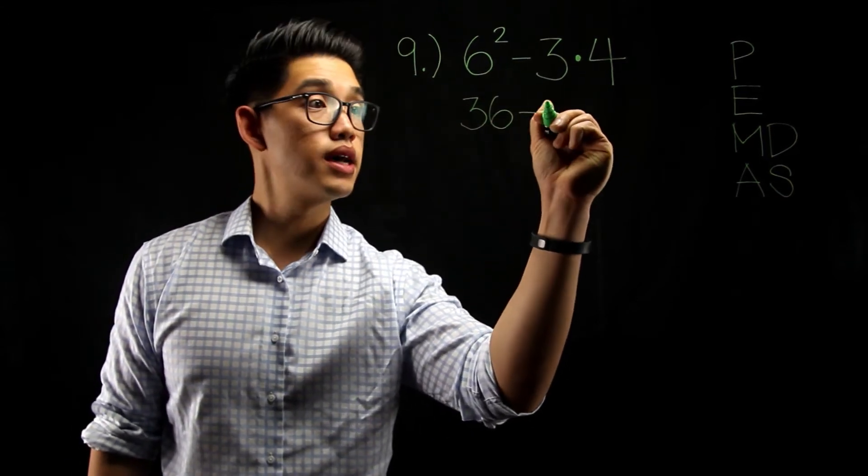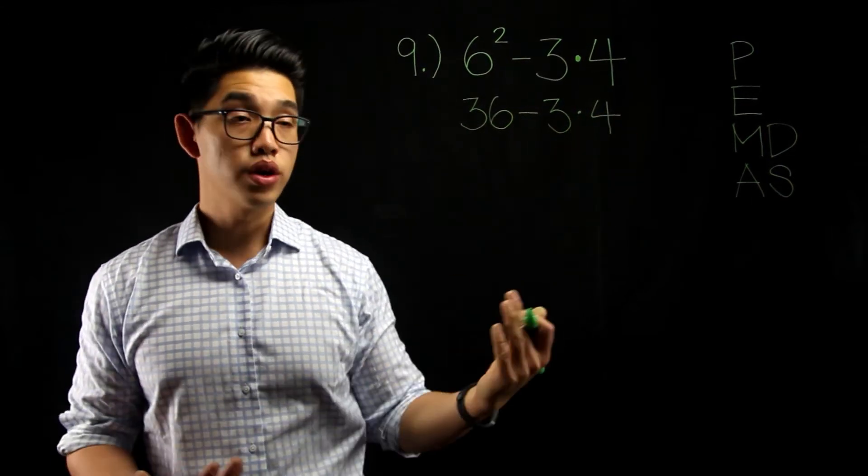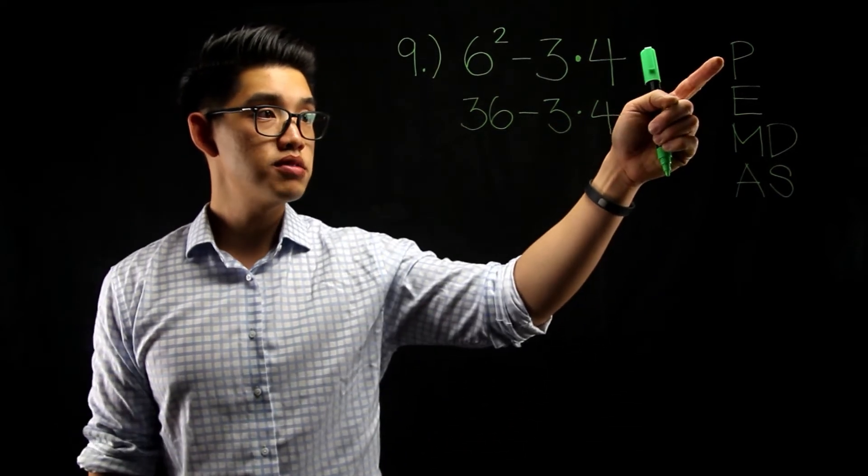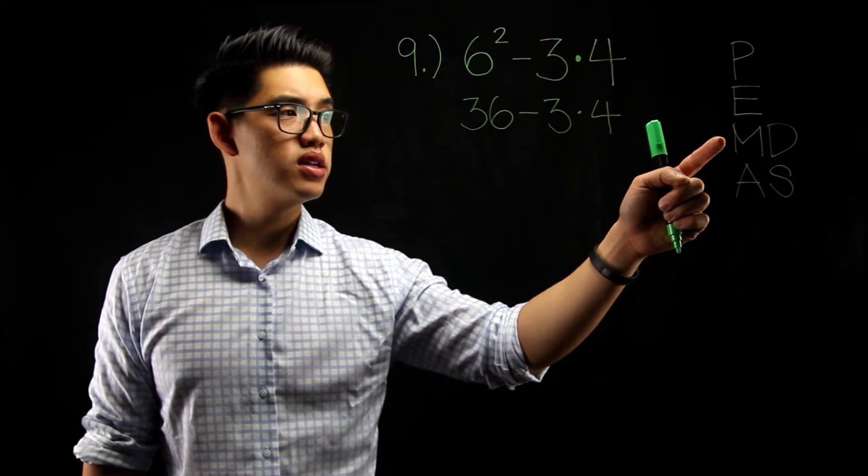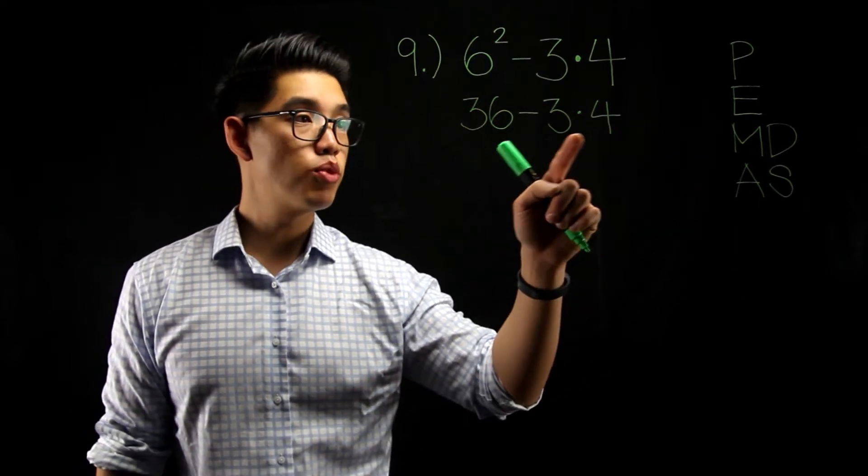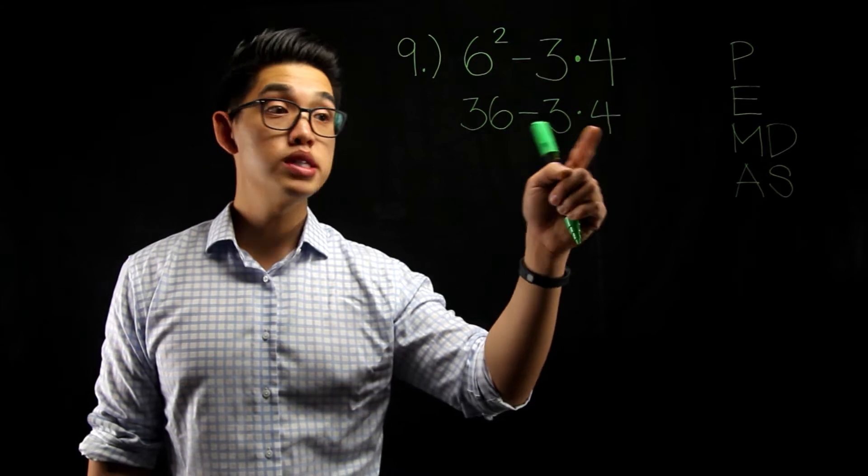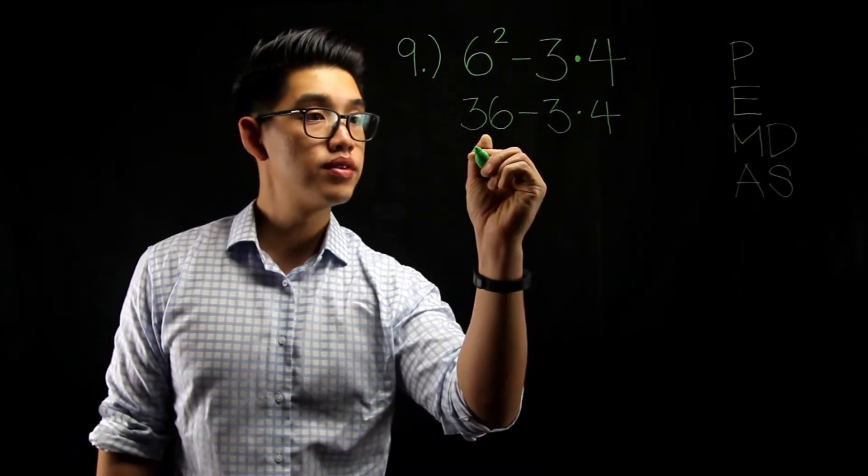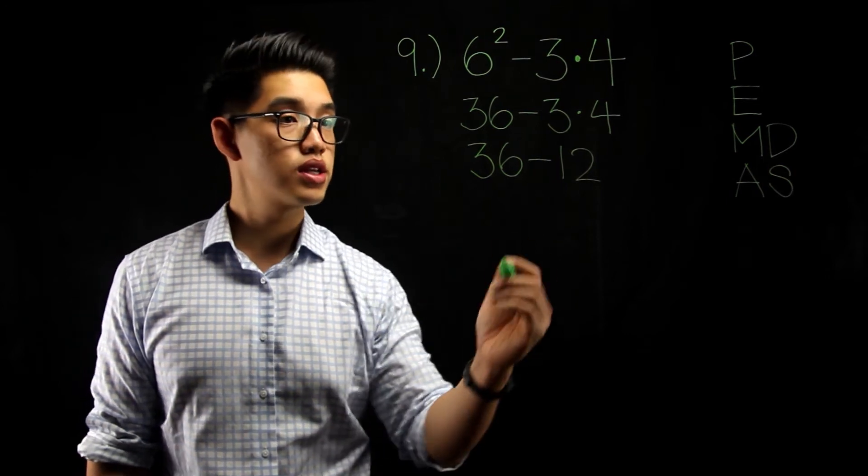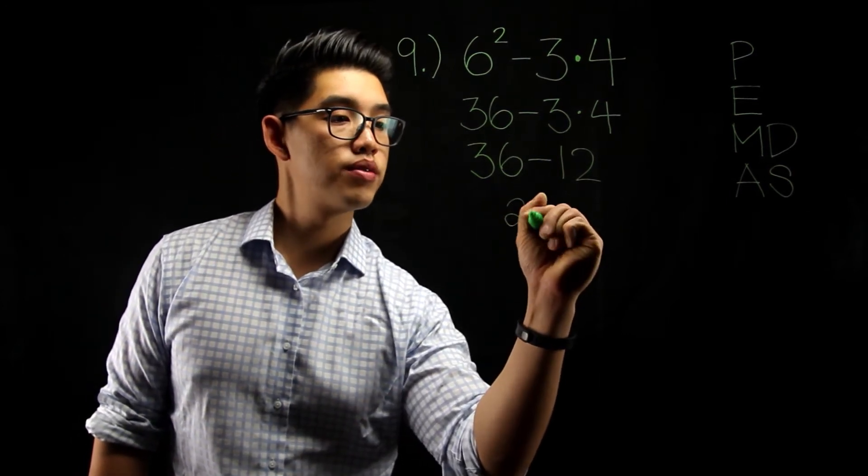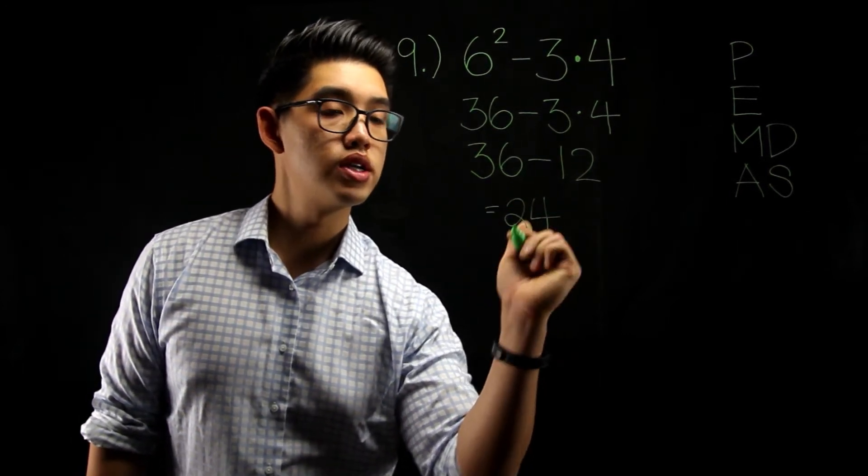We can drop everything else down. We're going to do the same thing. Are there any parentheses? No. Are there any exponents? No. Is there any multiplication or division going on? Yeah, I see there's multiplication going on right here. 3 times 4, that's going to give me 12. And then 36 minus 12 is just going to give me 24. So your answer is 24.